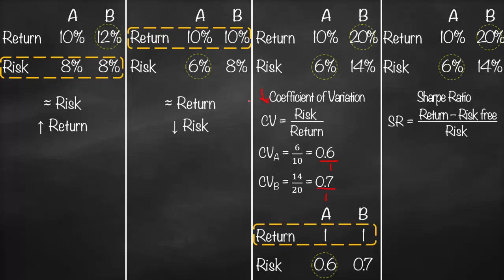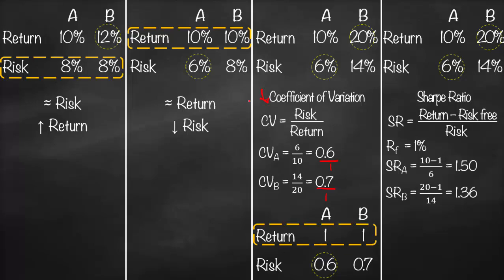Assuming the risk-free rate is 1%, the Sharpe Ratio for investment A is (10 minus 1) divided by 6, which equals 1.5. The Sharpe Ratio for investment B is (20 minus 1) divided by 14, which gives approximately 1.36.